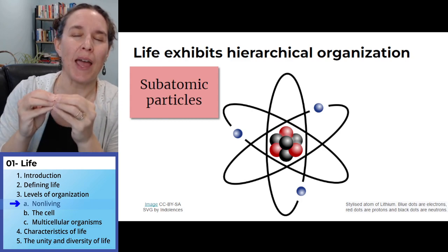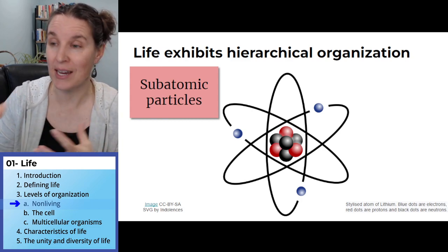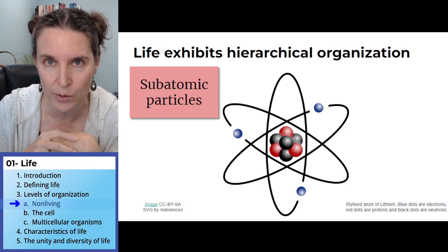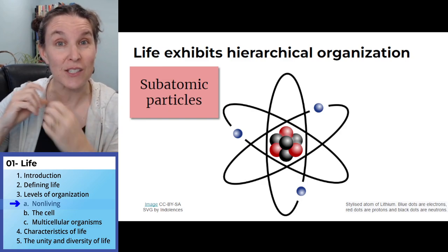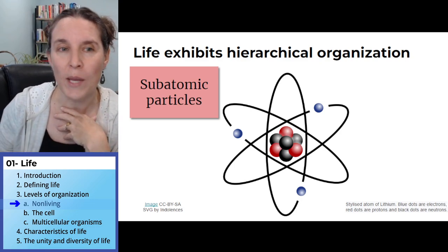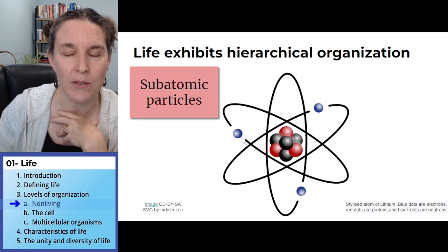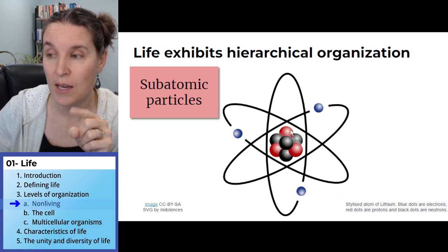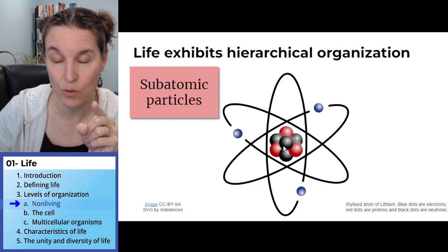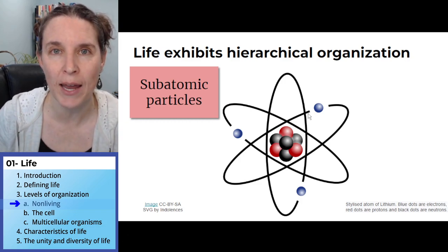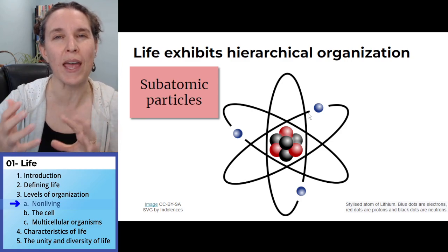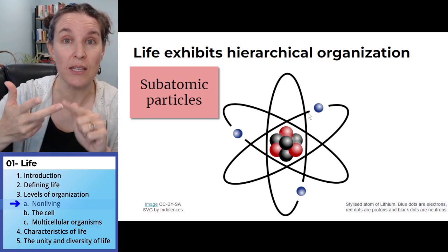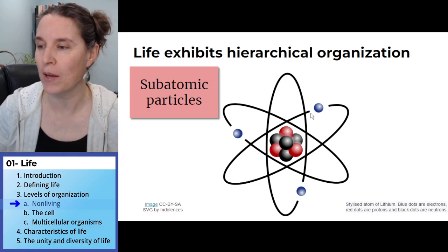Subatomic particles make up atoms, and this is a diagrammatic view of an atom. We're going to spend a lot of time talking about each of these subatomic particles because they're relevant to life and living systems. We have electrons which orbit a nucleus made of protons and neutrons. This is totally diagrammatic — just a way of helping us visualize those subatomic particles. So three subatomic particles: electrons, protons, and neutrons — and they make up atoms.